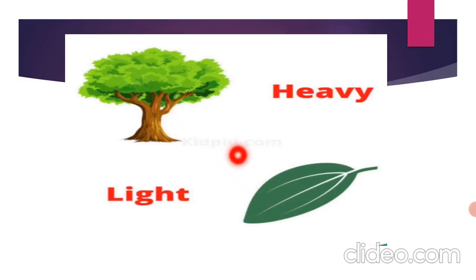Now next, over here there is a tree and a leaf. Come on, tell me what is heavy? Is the tree heavy or is the leaf heavy? Very good. So tree is heavy and only one leaf is light.